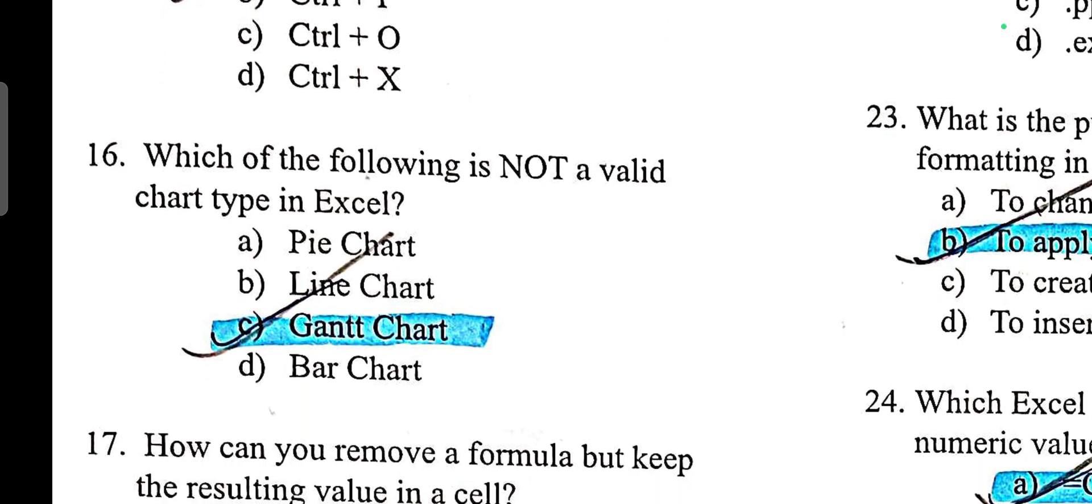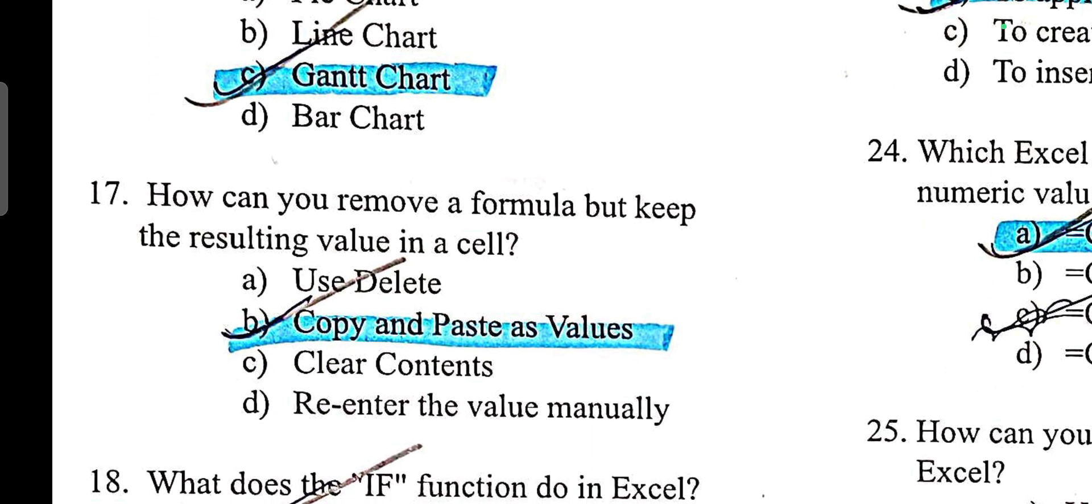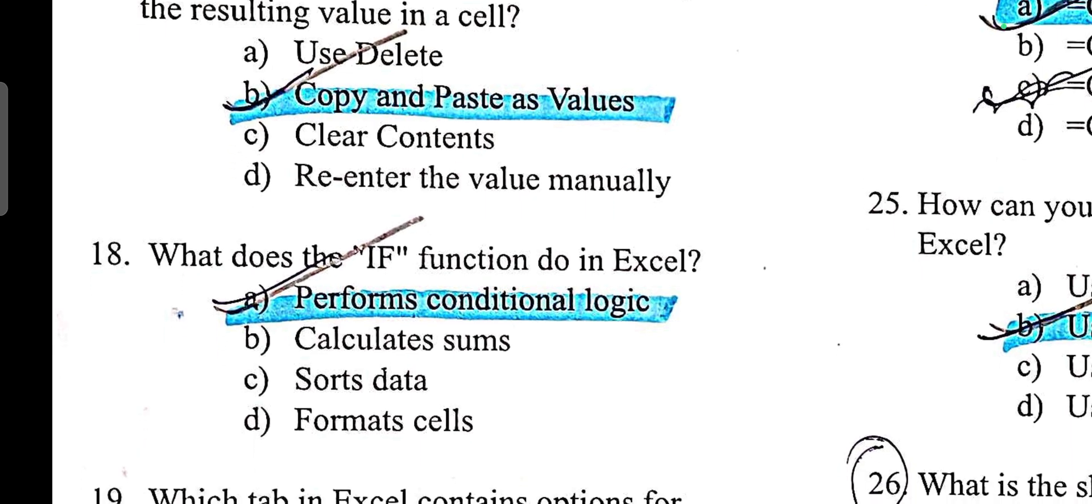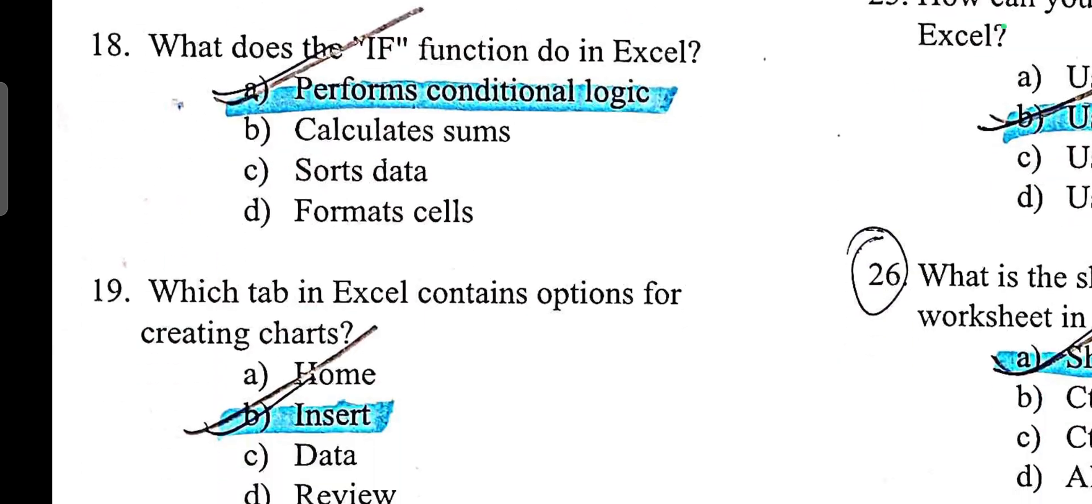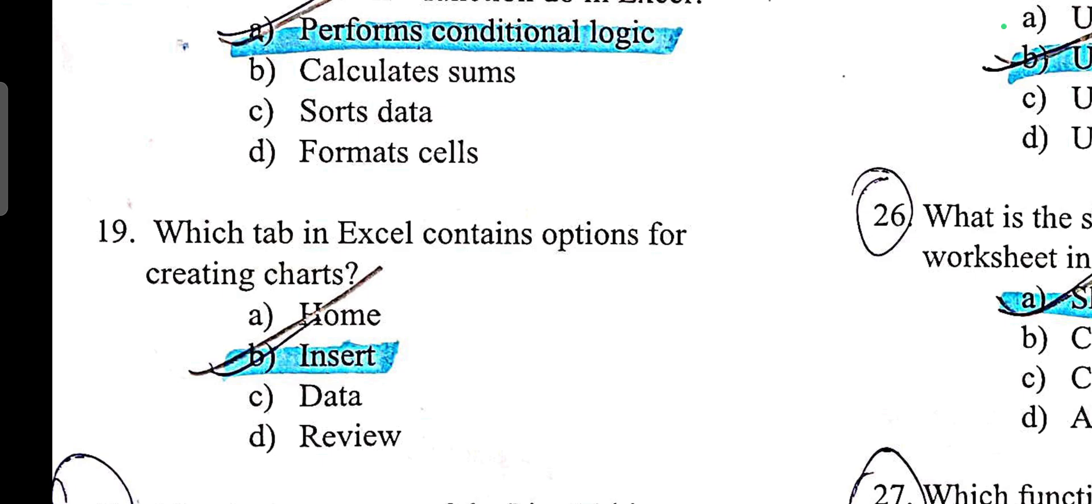Which of the following is not a valid chart type in Excel? Gantt chart. How can you remove a formula but keep the resulting value in cell? Copy and paste as values. IF function in Excel performs conditional logic. Which tab in Excel contains option for creating charts? Answer is insert.